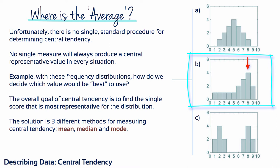Some people might select x equals 8 as the center, because more individuals had this score than any other single value. However, x equals 8 is clearly not in the middle of the distribution. In fact, the majority of the scores, 10 out of 16, have values less than 8. So it seems reasonable that the center should be defined by a value that is less than 8.